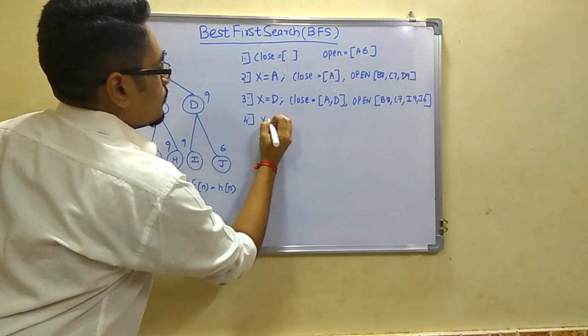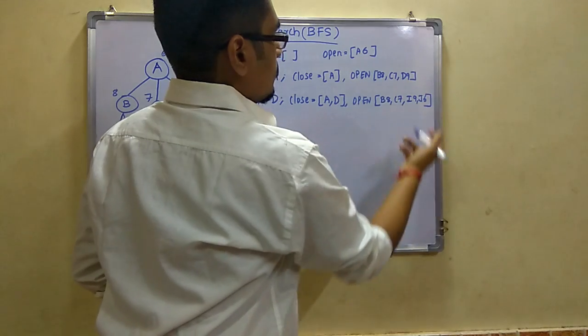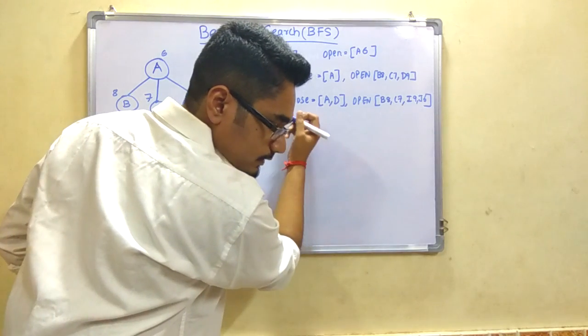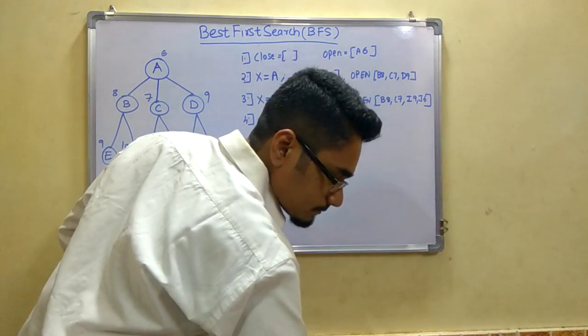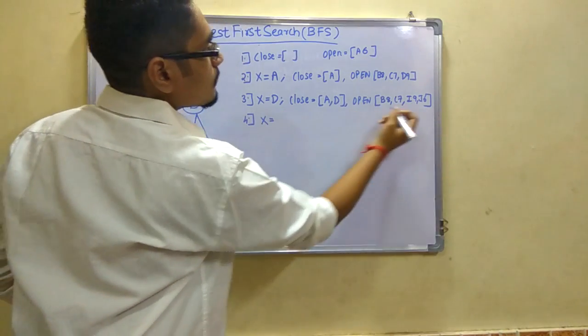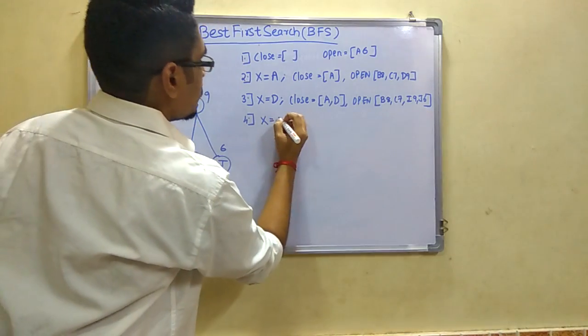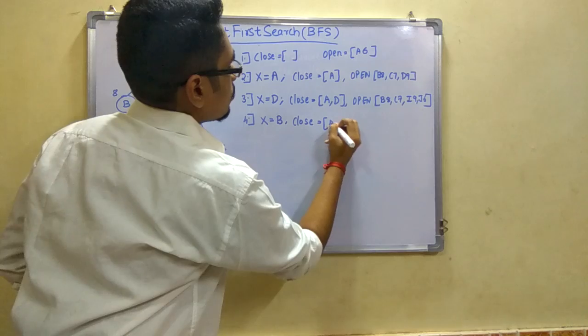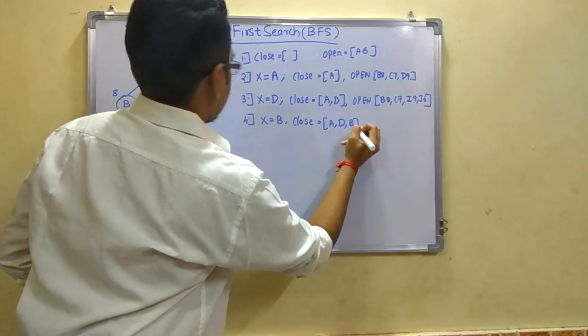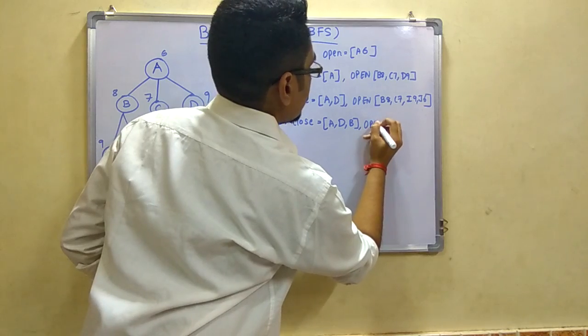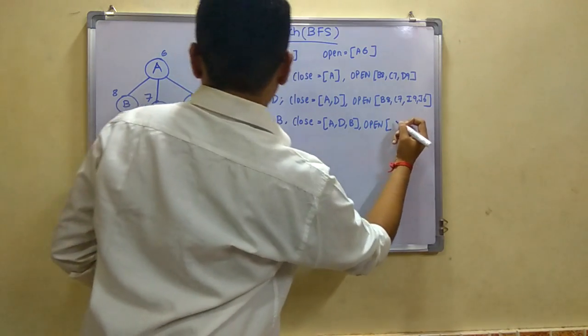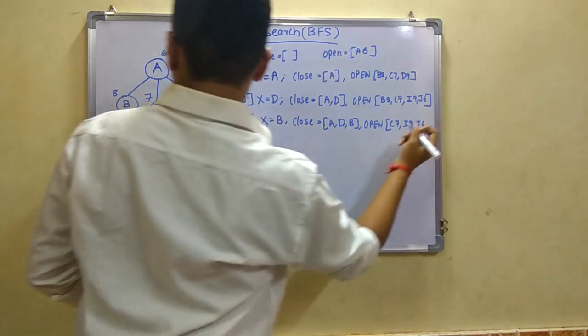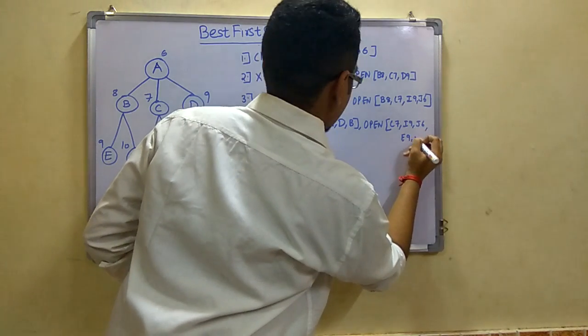Next we take the best value out of this, which is I9. Actually, we take B8. We have the set of closed nodes as A, D, B. We explore its children - the open nodes are C7, I9, J6, E9 and F10.